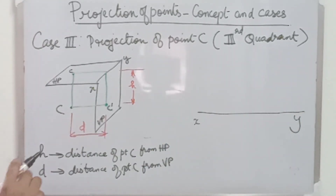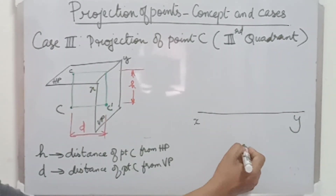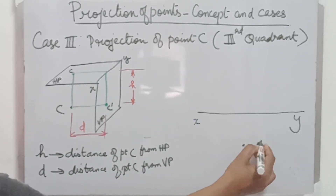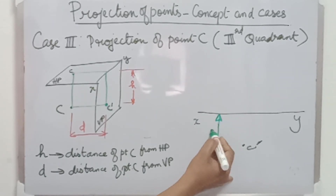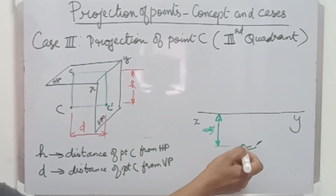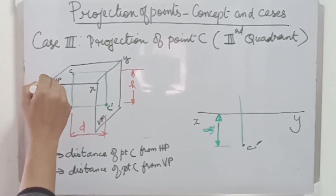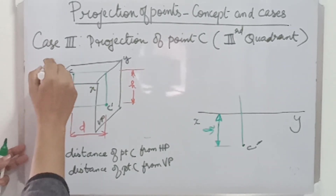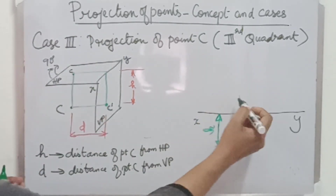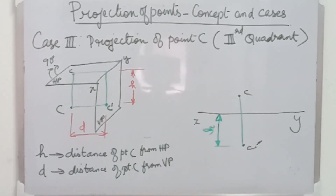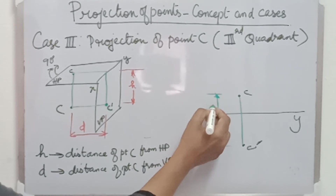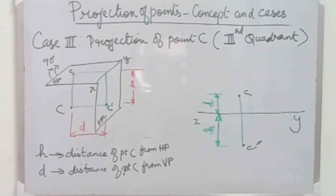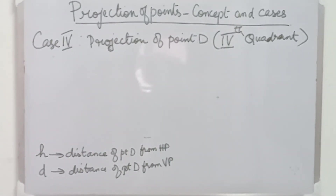Let us draw the orthographic projection here. Drawing the reference line first and marking the front view C dash. C dash is at a distance H from the XY line. Now draw the projector. We need to rotate HP by 90 degrees upwards, so point C will be coming somewhere up here, and the distance is D. It is just the opposite of case 1.